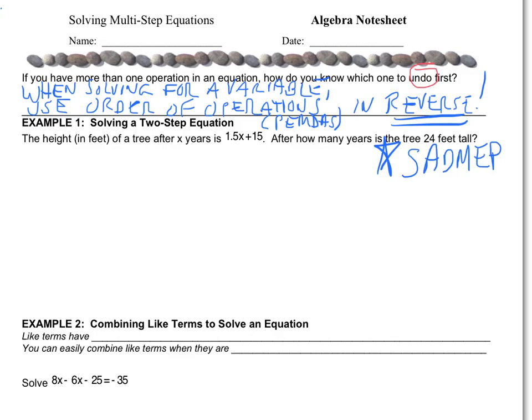In this first example, we have the height of a tree after X years, and we're given an equation. We want to know how many years it takes for the tree to be 24 feet tall. The first thing we want to do is define what the height is — let's give it a variable H. So they first gave us an expression, just 1.5X plus 15, but now I'm going to make it an equation. H represents the height in feet of the tree.